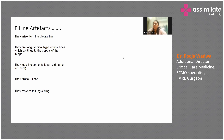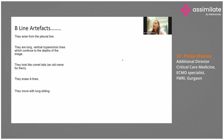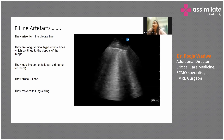B-lines arise from the pleural line. They are long vertical hyperechoic lines that continue to the depth of the image — they look like comet tails. When B-lines are present, you cannot see A-lines, and they move with lung sliding. Unlike A-lines which were parallel to the pleura and equally spaced, B-lines are continuous, vertically placed, and no A-lines are visible between them.